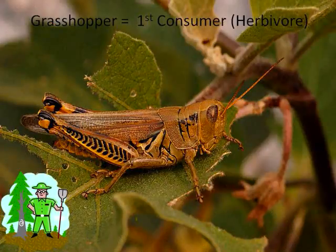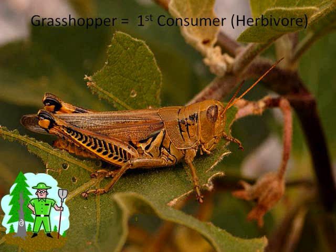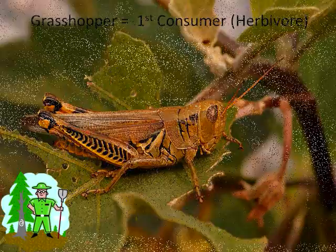Once a producer is in an environment, an animal comes along to feast on it. In this case, we see a picture of a grasshopper eating part of a leaf. This leaf is the food for Mr. Grasshopper and will give him the energy he needs to live. Mr. Grasshopper is an example of an herbivore because he only eats plants. Mr. Grasshopper is also known as the first consumer in this food chain because he is the first animal to eat or consume something in the food chain.